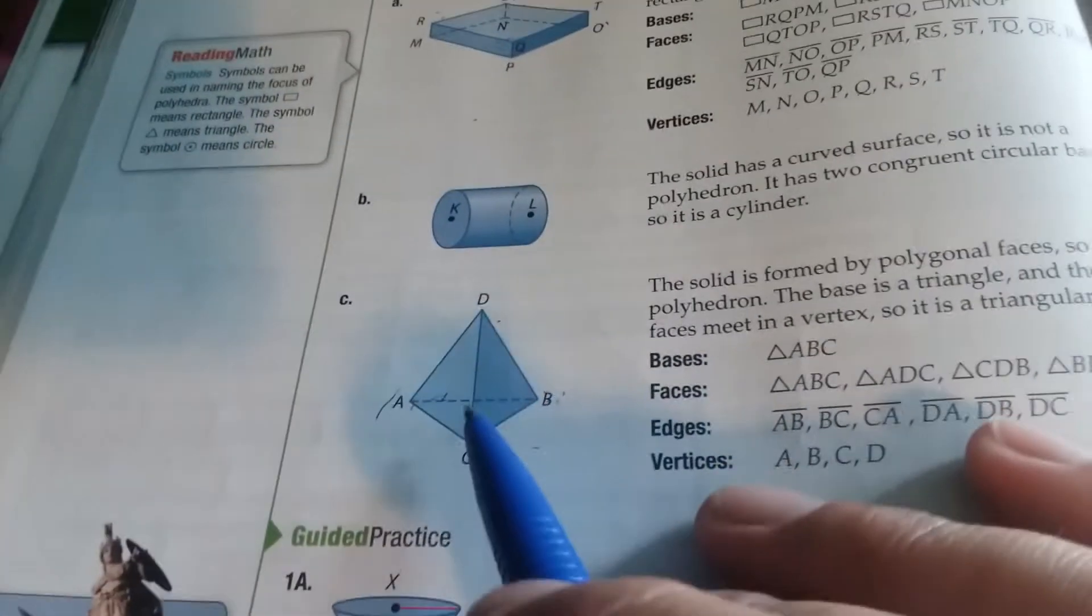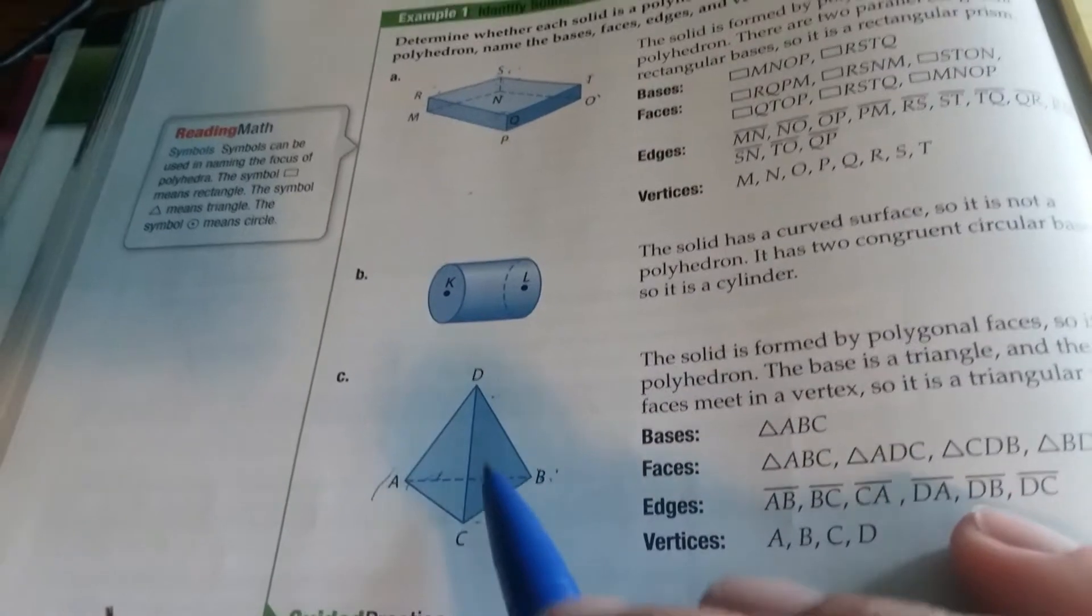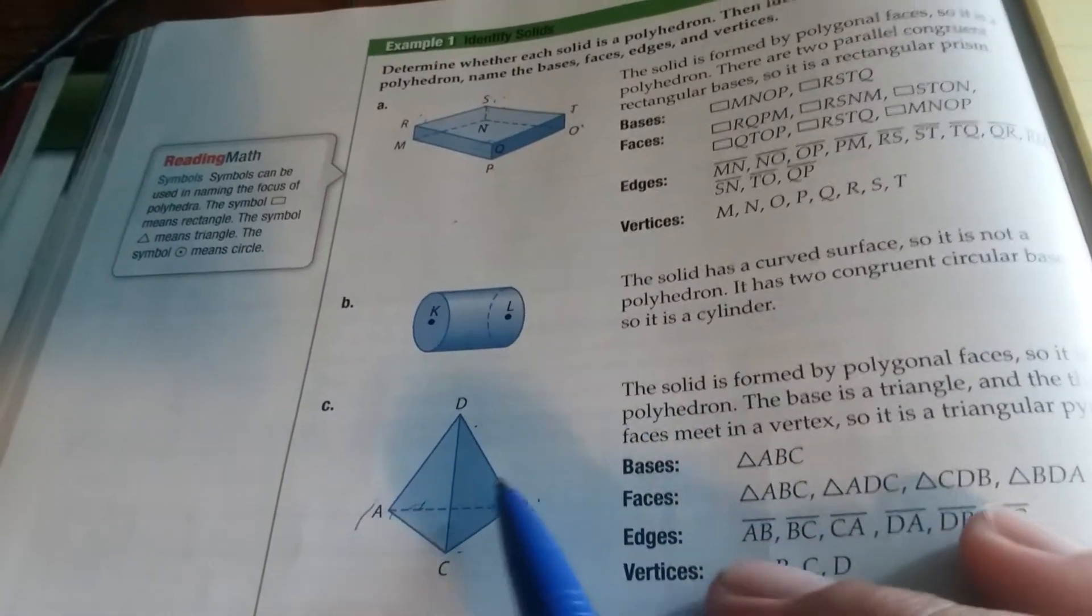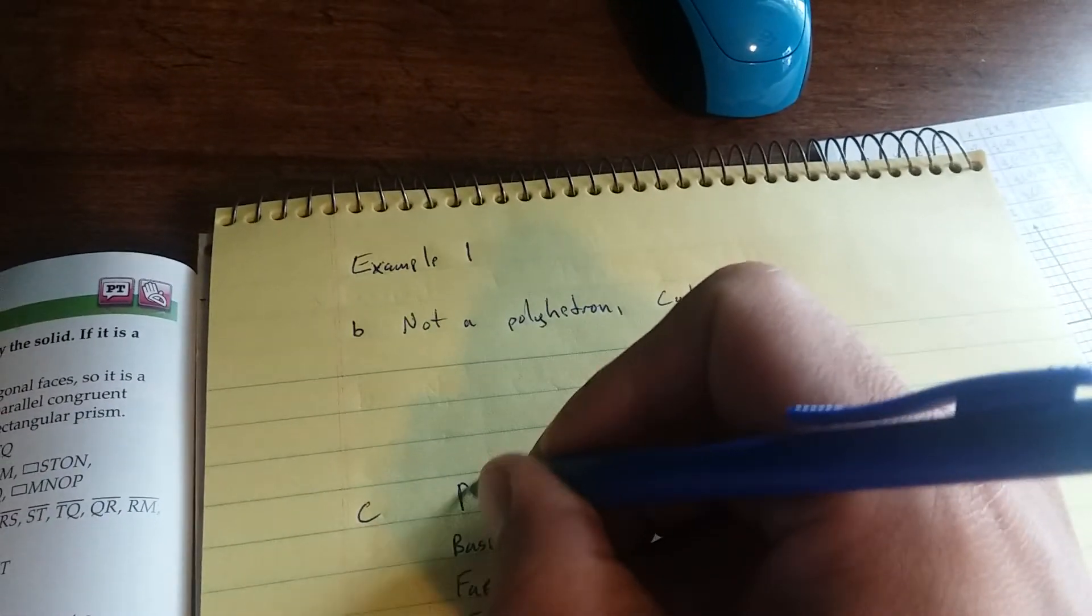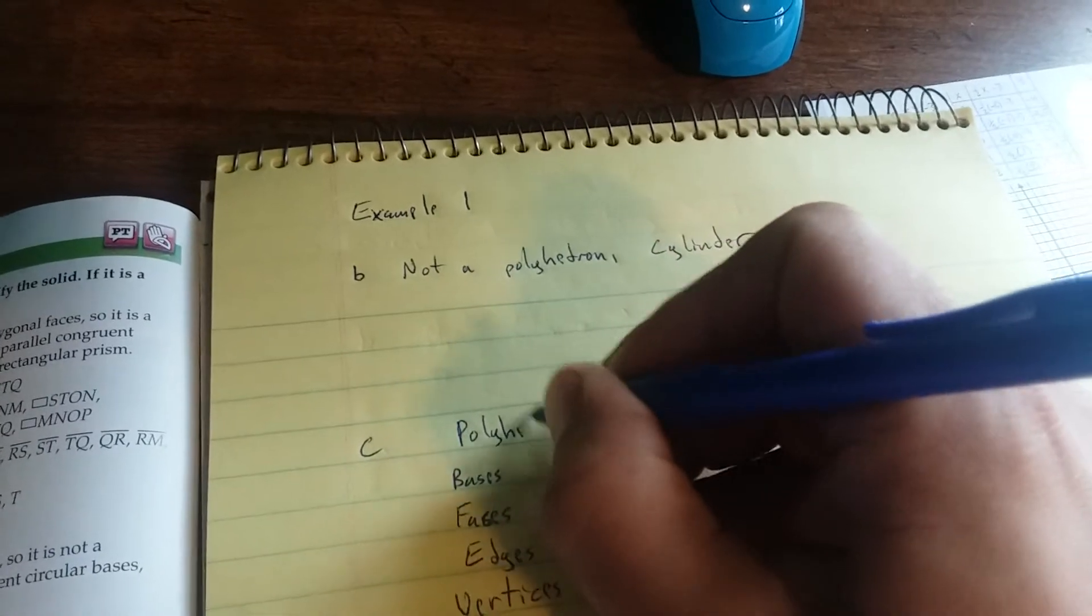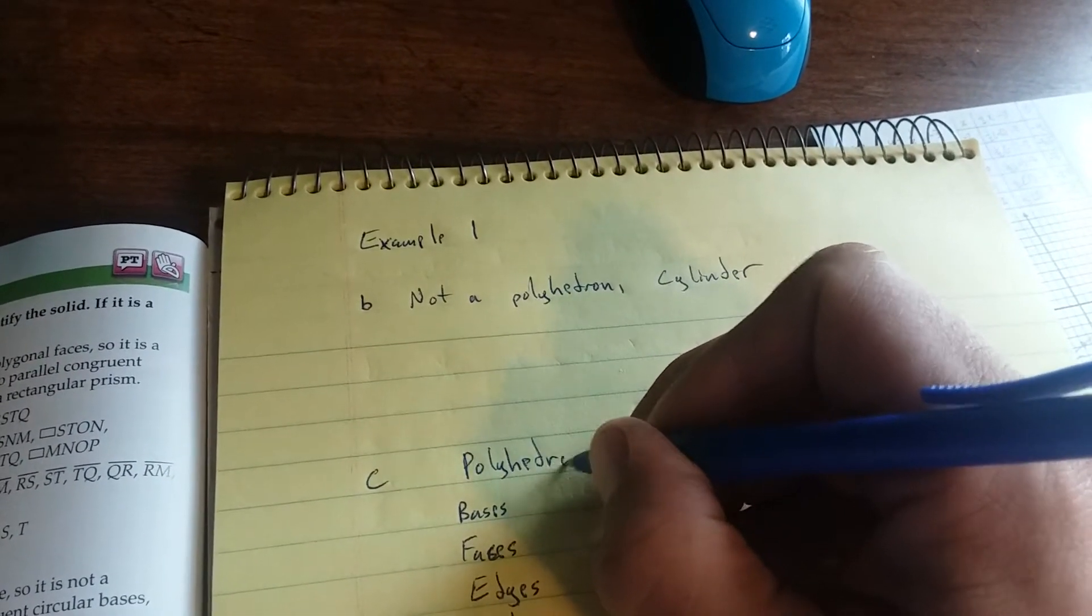See, we have a triangular base. All the faces are triangular, so this is a triangular pyramid and it is a polyhedron. Write polyhedron because we have all straight sides, and